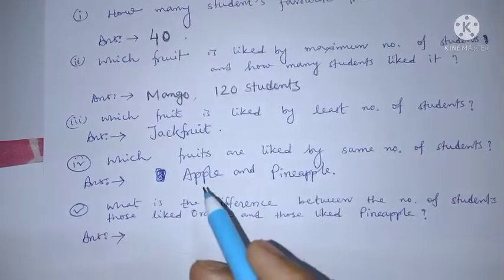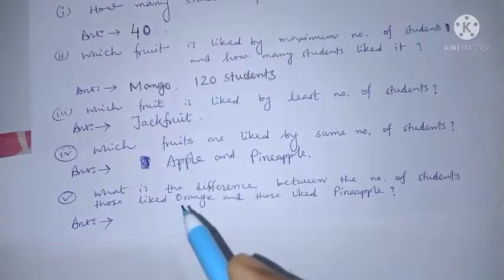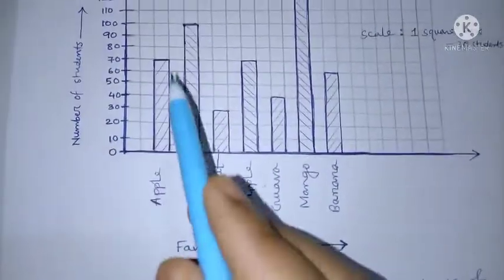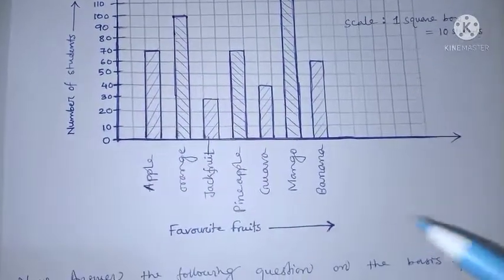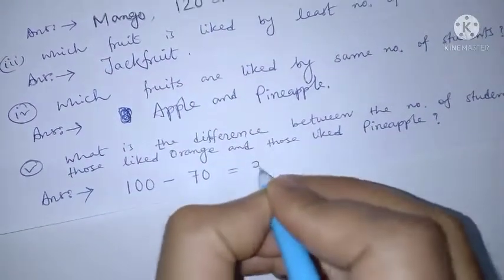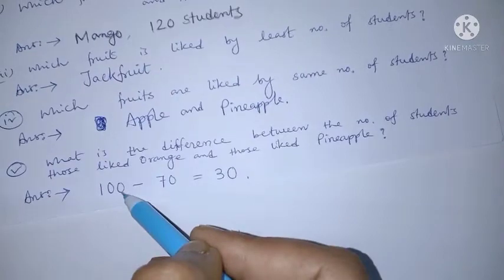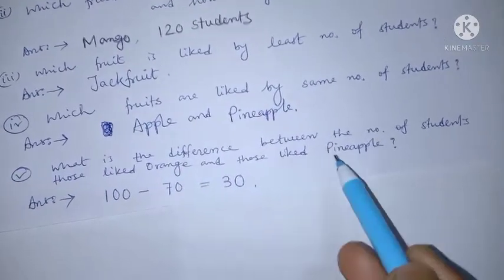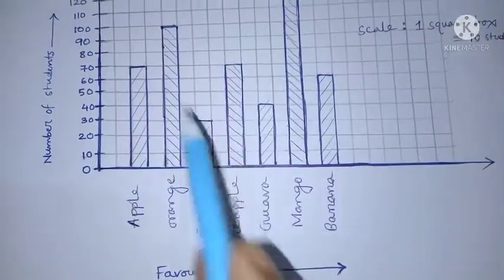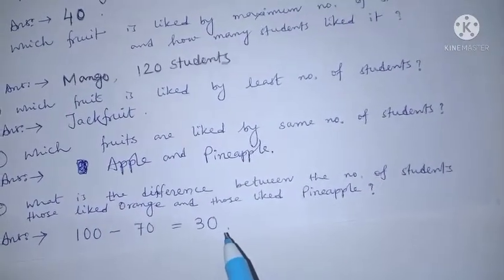The last question: what is the difference between the number of students who liked orange and those who liked pineapple? Orange is liked by 100 students and pineapple by 70 students. The difference is 100 minus 70 equals 30.